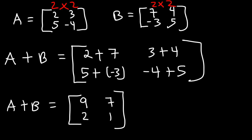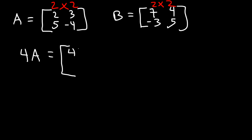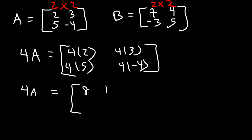Now, if you want to multiply matrix A by 4, all you need to do is multiply every element by 4. So it's going to be 4 times 2, 4 times 3, 4 times 5, and 4 times negative 4. Therefore, 4A equals 8, 12, 20, and negative 16.